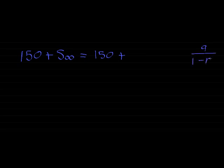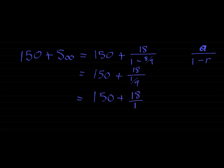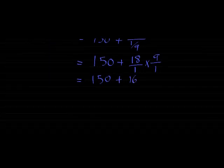Remember, sum to infinity is a over 1 minus r. Which means the first term was 18 divided by 1 minus 8 over 9. Which means it's 150 plus 18 over 1 minus 1/9. So 18 over 1 multiplied by 9 over 1, which means it's 150 plus 18 times 9. 162 plus 162 gives us 312 centimeters.